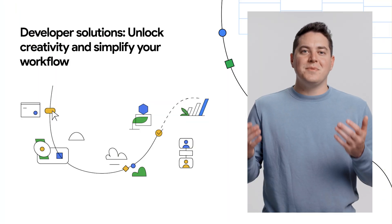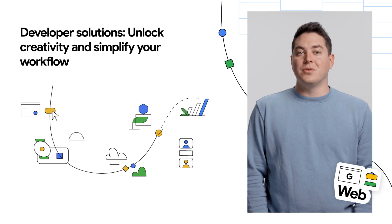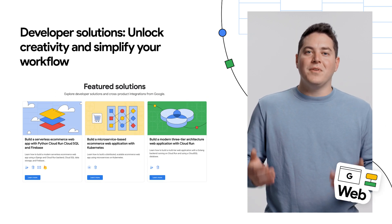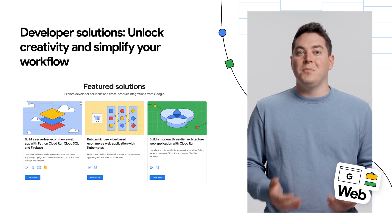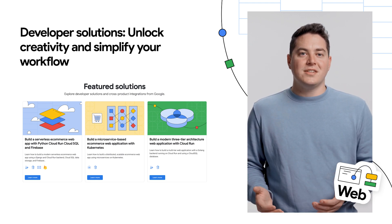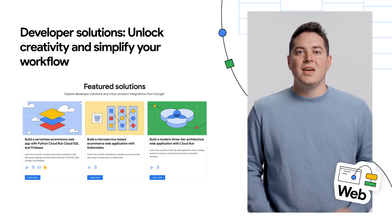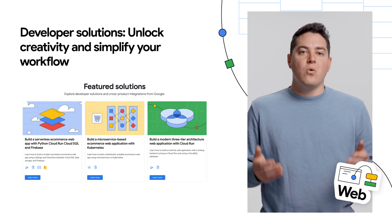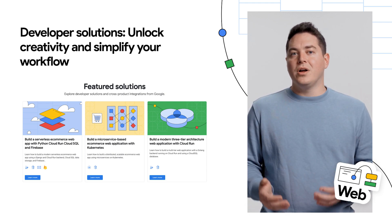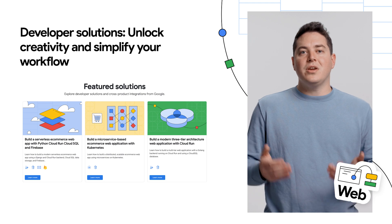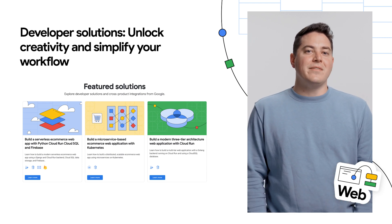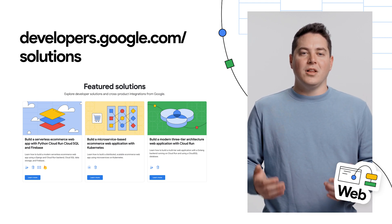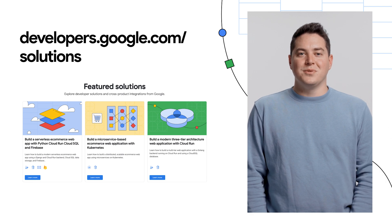Finally, we have some exciting new launches on developers.google.com, featuring three new solutions aimed at helping developers get started when building microservices, three-tier architectures, and serverless web apps. Each of these solutions contains a pathway, a video, one-click to deploy on Google Cloud, and a quiz where you can earn a badge and save it to your developer profile. You can learn more at developers.google.com/solutions.